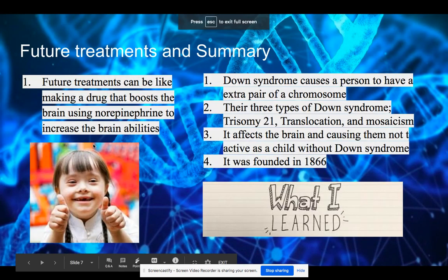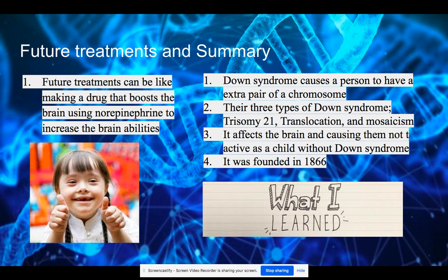Future treatments could include a drug that can boost the chemical messengers of the brain — a type of drug that will increase brain abilities to be closer to a person without Down syndrome. This could help them recover quicker and have fewer brain abnormalities than usual, but this is still research from MIT. They have actually tested on mice, giving them an extra chromosome pair and using the drug to see if it works, but it may still need to be tested on actual patients with Down syndrome.